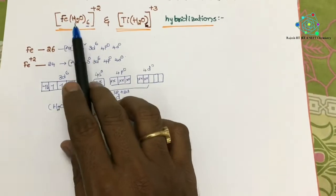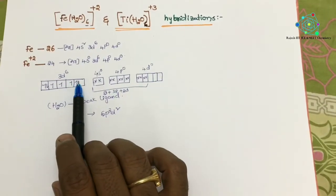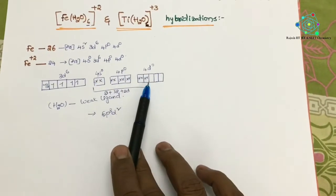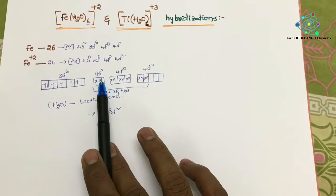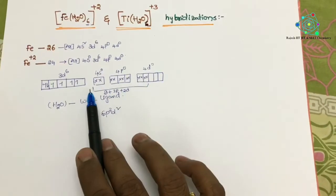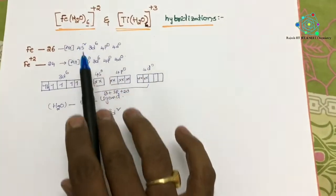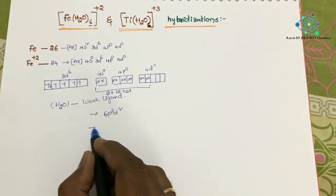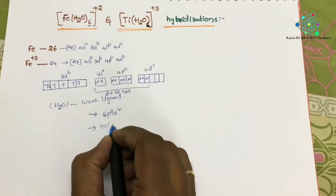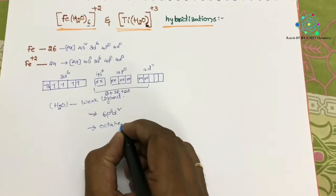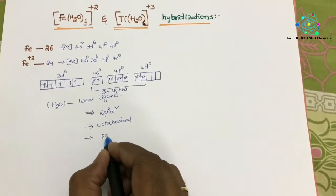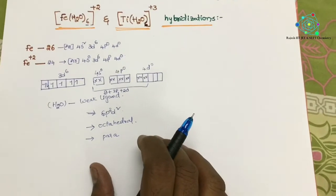Because of the weak ligand water, these 3d electrons are never involved in rearrangement. That is why the ligands are using the outside d orbital of the Fe²⁺ ion. This is called an outer spin complex. Simply, its geometry is octahedral because it has 6 ligands — hybridization sp³d². And it is showing paramagnetic behavior. This is about the first complex.